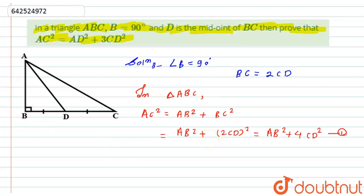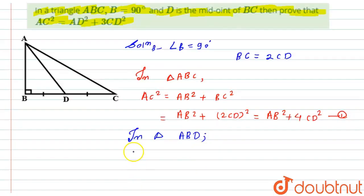Now in triangle ABD, by using the Pythagoras theorem, AD² equals AB² plus BD². Now as we have written above, BC is twice of CD, hence BD will also equal CD. So in place of BD, can I write CD? Yes. So here it becomes AB² plus CD². Let this be equation number 2.